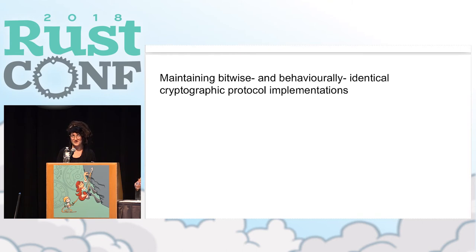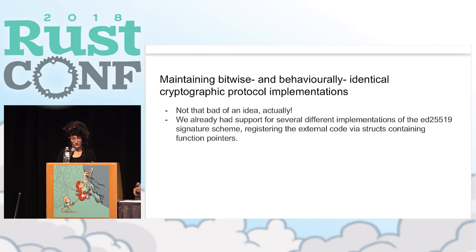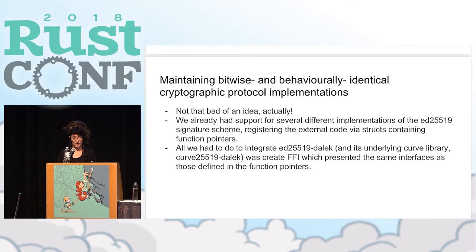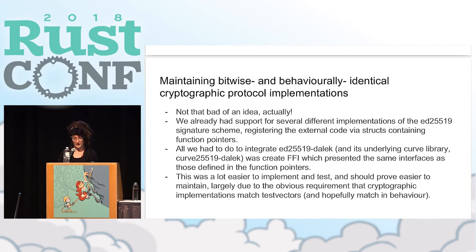Deciding to do cryptographic implementations actually turned out to be okay. We already had support for several different implementations of the ED25519 signature scheme, registered via structs containing function pointers. To integrate ED25519 — a pure Rust implementation of the signature scheme and its underlying curve library — all we had to do was create a file presenting the same interfaces defined by those function pointers. This is a lot easier to implement and test and should prove easier to maintain, largely because cryptographic implementations must match test vectors — if they don't, something's horribly wrong with your math.